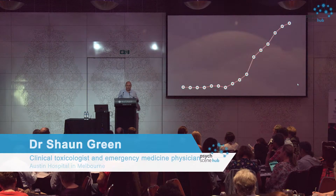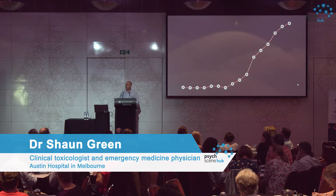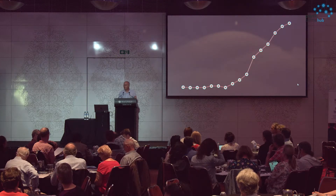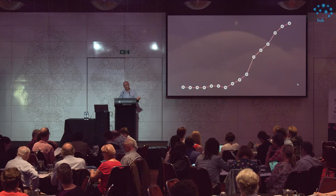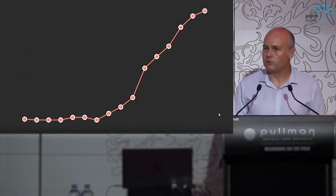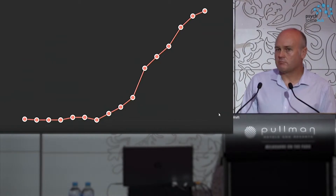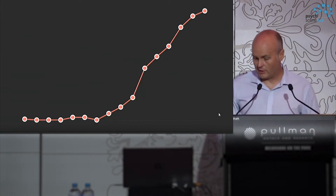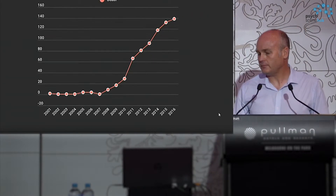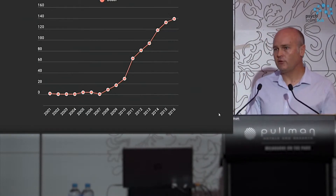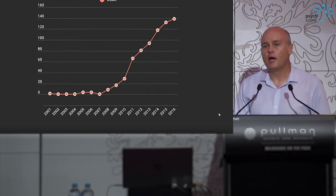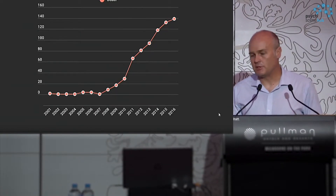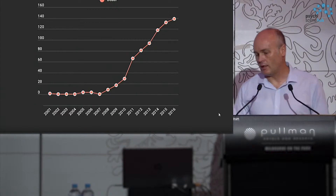In 2016 in this country, nearly 1,500 individuals lost their lives as a result of drug overdose. Historically, opioids have made up the vast majority of those deaths. In the 1990s it was heroin; in the last decade there's been an increasing contribution from prescription opioid analgesics. Over the last decade we've also seen an increase in fentanyl and fentanyl analogues, with unintentional deaths rising markedly to near 150 in 2016.